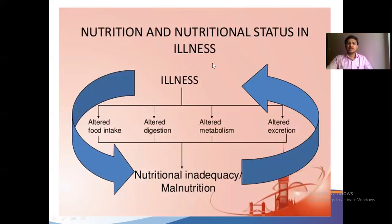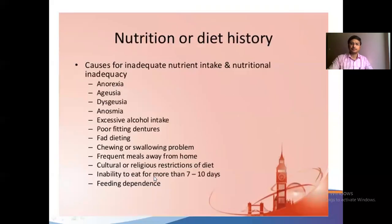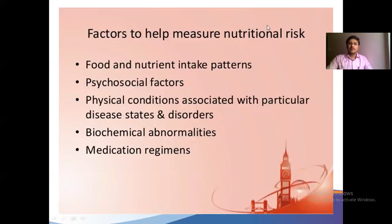Regarding nutrition status in illness: when you are ill, there is altered food intake, digestion is not happening properly, and there is altered metabolism and excretion — leading to nutrition inadequacy. Malnutrition is the commonest cause of immunodeficiency worldwide. Factors to measure nutrition risk include food and nutrient intake patterns, psychological factors, physical conditions associated with particular diseases, medicine risks, and biochemical abnormalities.